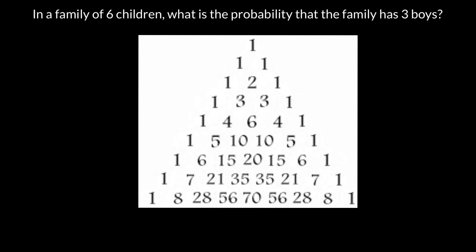If you take a look at this triangle, you would find that here on the sides we have only ones — one for every row. It starts with a one and it ends with a one. You don't have to memorize all the numbers in order to build this Pascal's Triangle. There is certain logic that we use in order to fill all the numbers.